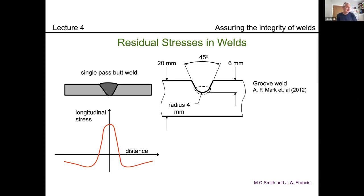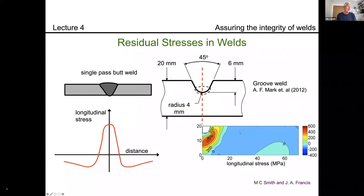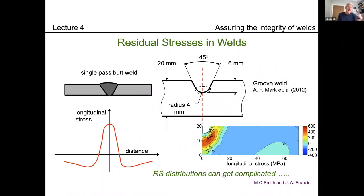Residual stress fields can get extremely complicated. This example shows a weld laid into a groove — a cross-section of a plate with a groove machined in it, filled with one, two or three weld passes. In this diagram, red is tension and blue is compression. You can see tension underneath the weld, compression inside the weld, and compression elsewhere. The message is that residual stress distributions can get complicated, but the basic principle is the same: plastic misfit caused by temperature gradients during welding, visualised by the three-bar analogy.